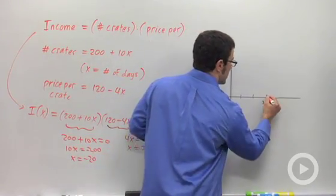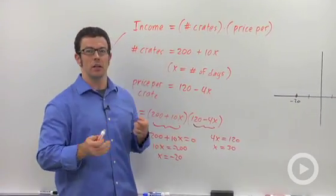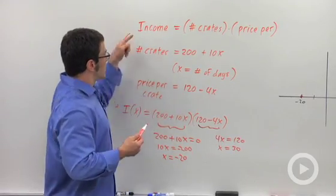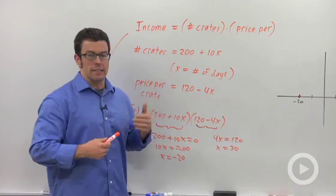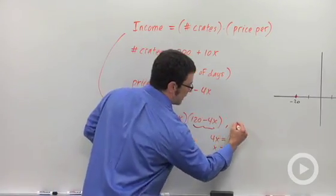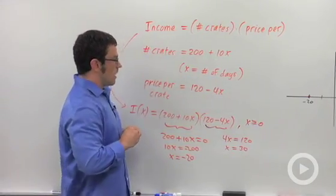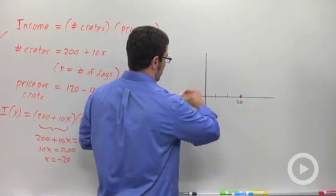Now, one thing to consider is what values of x make sense. We're not dealing with a function in the abstract. This describes income after the farmer waits x days. X can't be negative, so x is greater than or equal to 0.